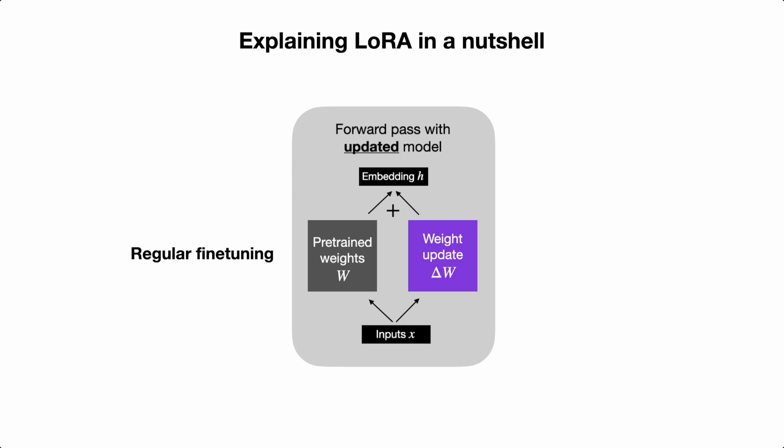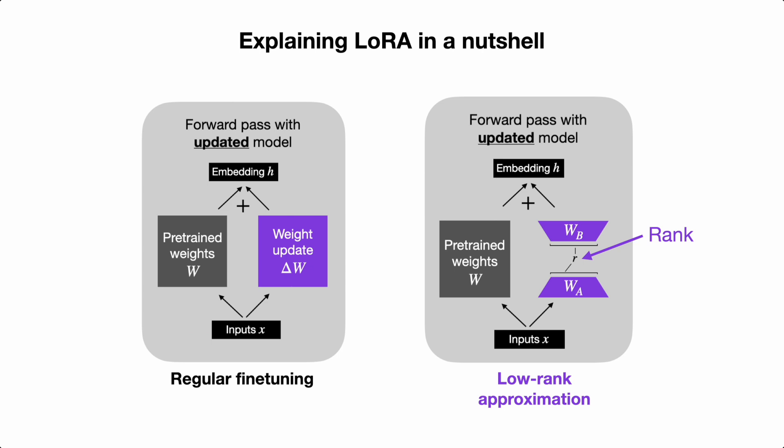So how does LoRA work? Imagine you have the regular fine-tuning setup where you want to update the pre-trained weights. You have the pre-trained weights on the left-hand side and the weight update on the right-hand side. You can think of LoRA as a low-rank approximation or decomposition of that weight update matrix. Instead of learning the full weight update matrix as in regular fine-tuning, LoRA learns two smaller matrices. The trick is that we choose a very small rank for these matrices to save a lot of parameters, making training more efficient.